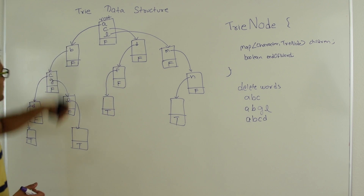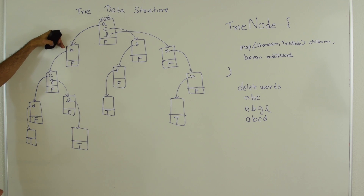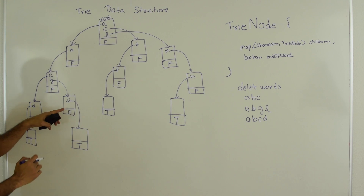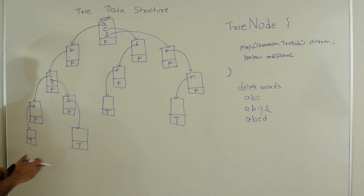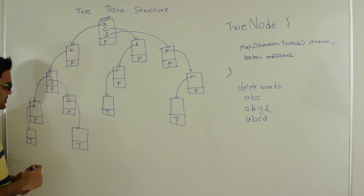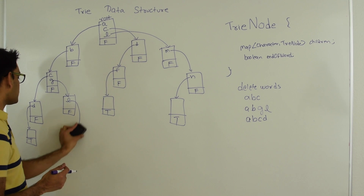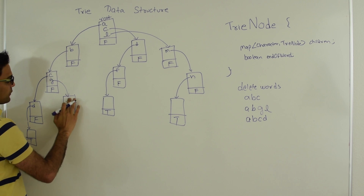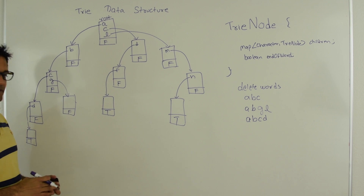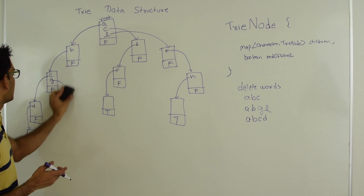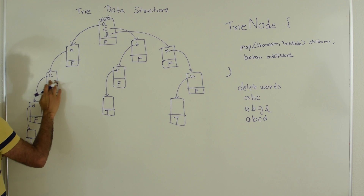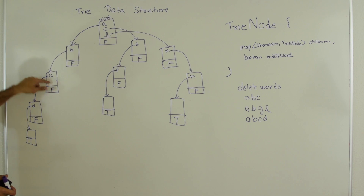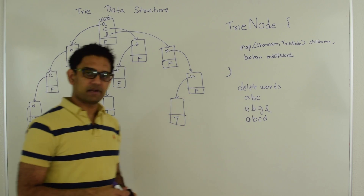Next let's delete ABGL. We start at root, follow A, reach that Trie node, follow B, reach that Trie node, follow G, reach that node, then follow L and reach that Trie node. This node has no children — its map is empty — so we can safely delete it. We remove L from its parent's map; now that map is empty so we delete that node too, go one level up, and delete G. We stop here because this node has another link — C — so we cannot delete further. We are done deleting ABGL.